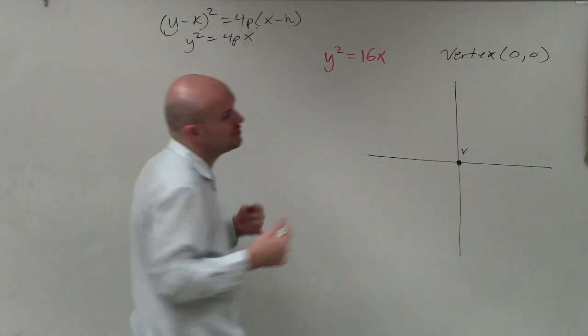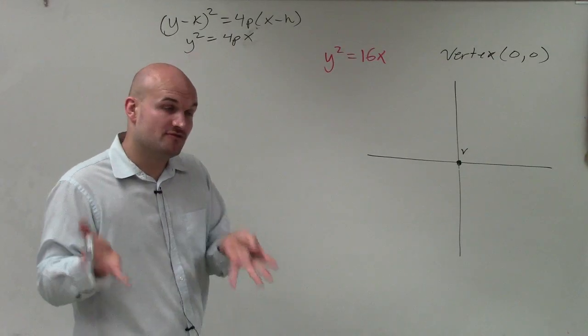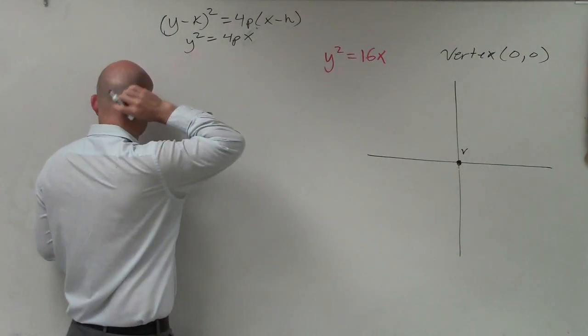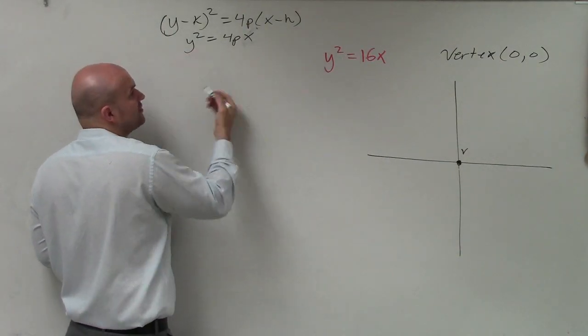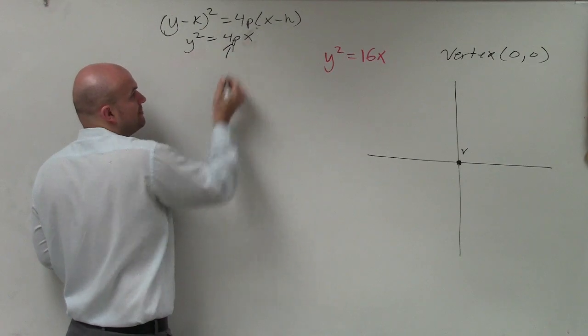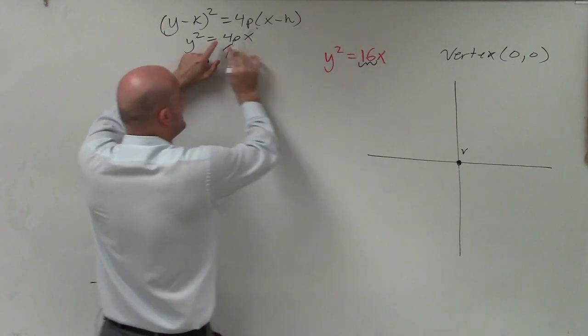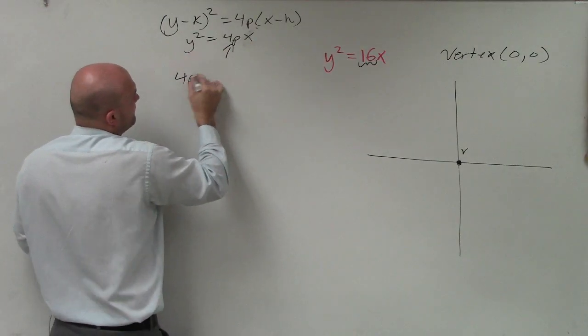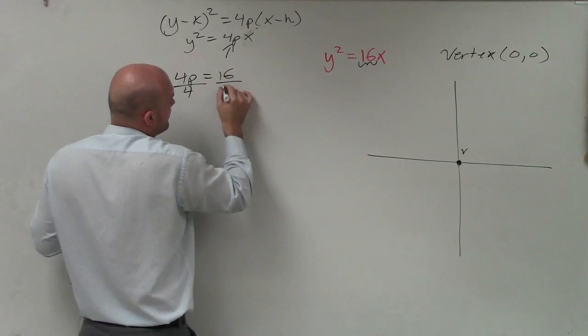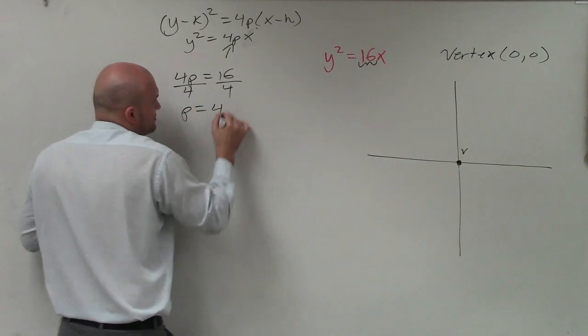So to do that, I need to determine what the focus is going to be. And remember, the distance from your vertex to your focus is going to be p. So in this case, you can see I have 16. 16 is equal to 4p. So I can say 4p = 16. Divide by 4, p = 4.